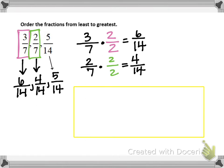Once the fractions all have the same denominator, all we have to do is put their numerators in order from least to greatest, and then the fractions will also be in order from least to greatest. The smallest fraction will be 4/14. Then the fraction in the middle will be 5/14.